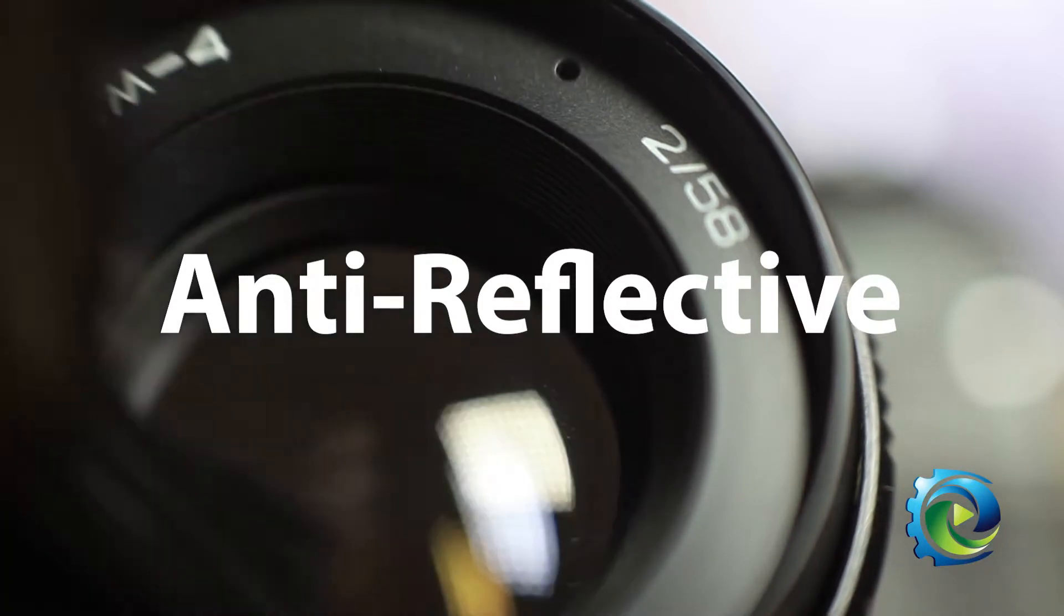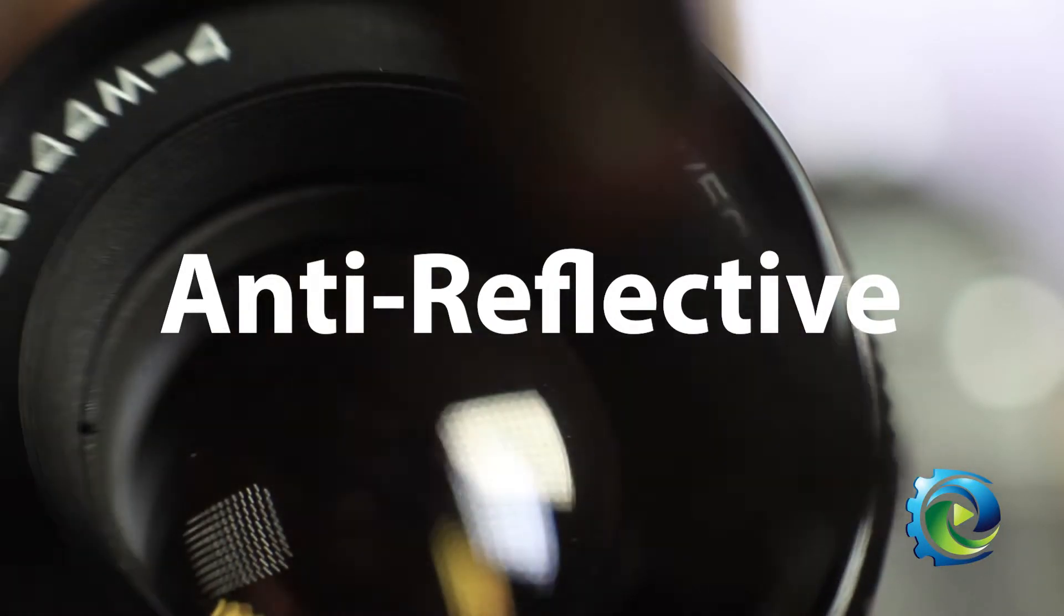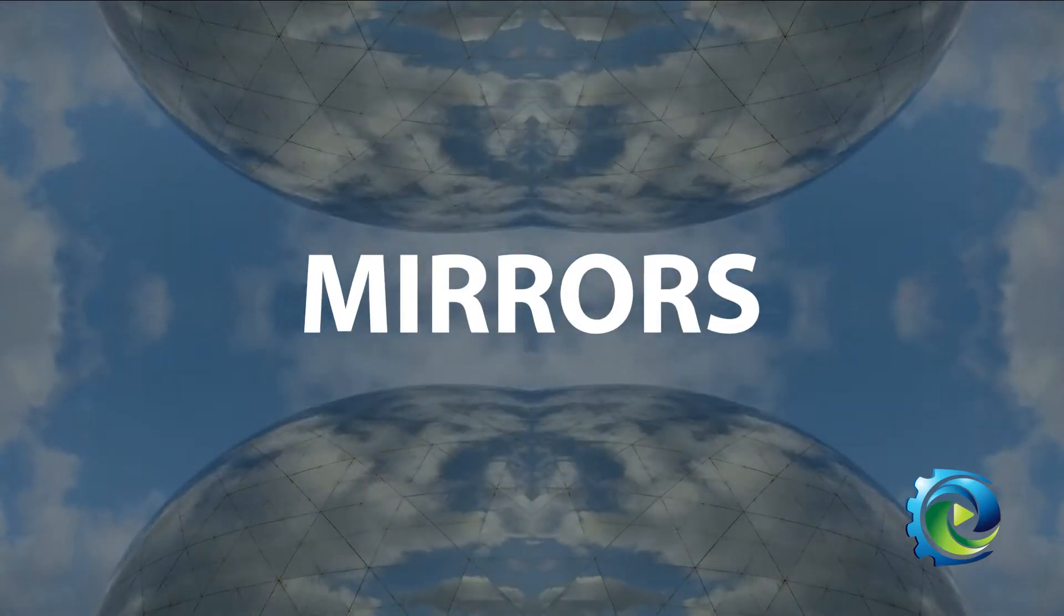With our optical coatings, you can change what the glass does spectrally. We do anti-reflective coatings that reduce the reflectance of the surface. We do mirrors, which reflect.